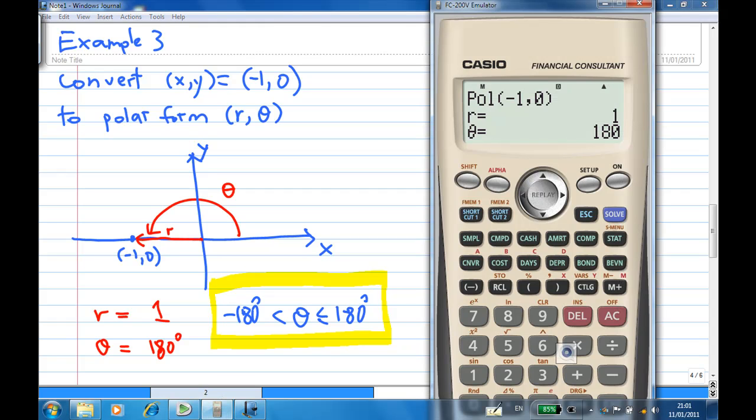Although this calculator is different from the 991ES, the principle is the same. You set up the calculator, then you just press the POL function and enter the (x,y) coordinates. That is the end of the recording.